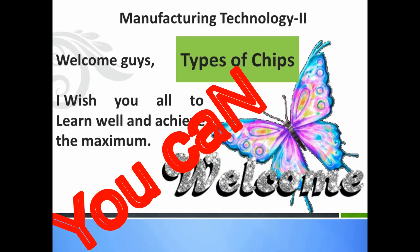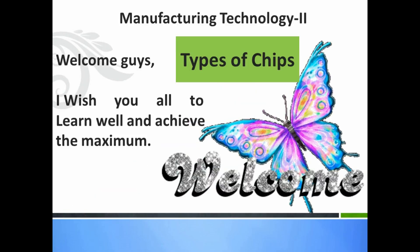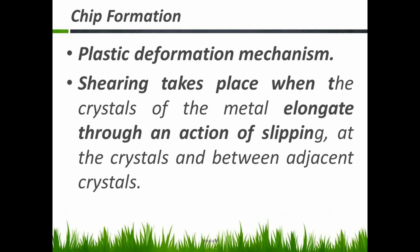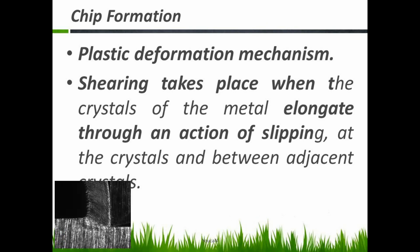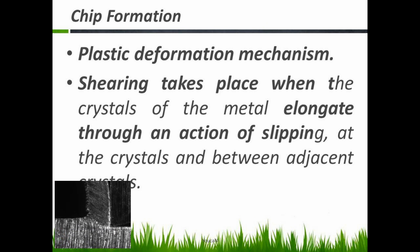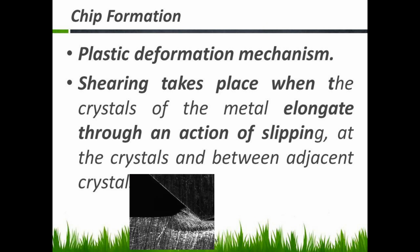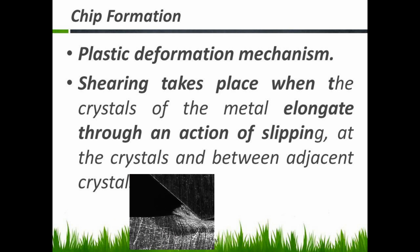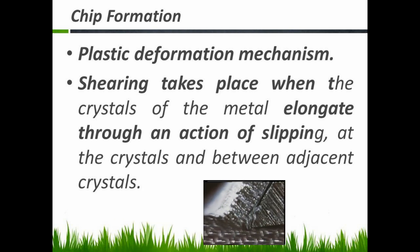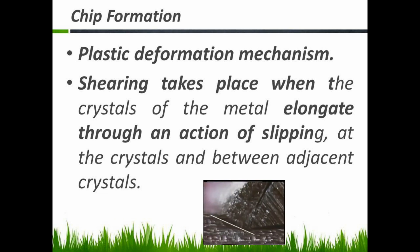Welcome guys. In this video we are going to see various types of chips formed in the metal cutting process. Chips are formed due to the plastic deformation mechanism. Shearing takes place when the crystals of metal elongate through an action of slipping at the crystals and between the adjacent crystals.